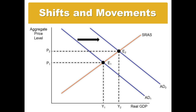If the price level is changing — going from P1 to P2 — that would be an indication that there's a movement along the supply curve caused by a shift in aggregate demand.